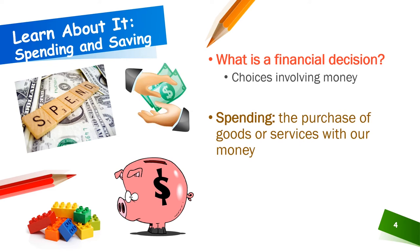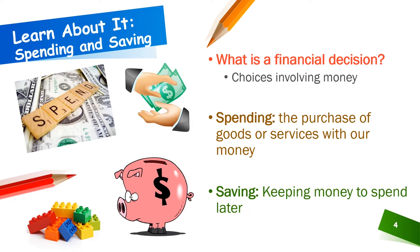Spending is when we purchase goods or services within our community with our money. Goods are pretty much anything you can buy and take home with you or touch. Services are things you pay for, like going to a movie theater or getting your haircut. Savings is when we keep money to spend later. Sometimes we might have a savings goal, and a savings goal might be something that takes a bit longer time to reach. For example, if I was saving up to buy a new bike, I could choose to buy a pack of Pokemon cards, or I can save my money to buy a bigger Lego toy later. The Lego toy in that case would be my savings goal.